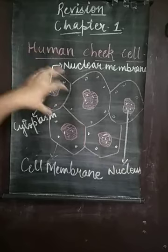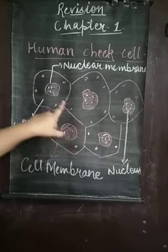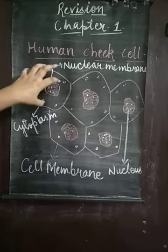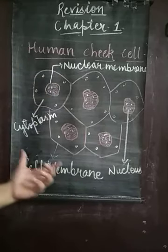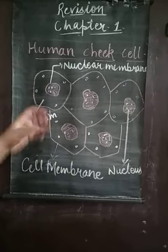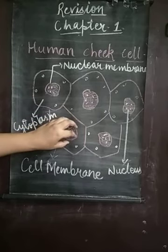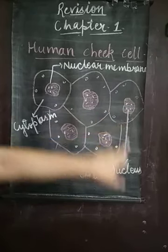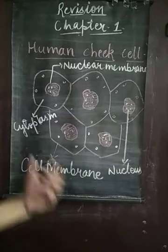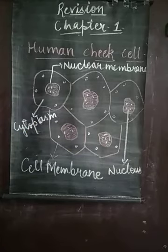Let's see what is present in a single cell. All these cell structures are similar. First, there is the outer membrane, known as the cell membrane. Inside the cell membrane there is a liquid known as cytoplasm. In the center there is a structure known as the nucleus, which is present in the center of each cell. Just as the membrane of the cell is called the cell membrane, the membrane of the nucleus is known as the nuclear membrane.